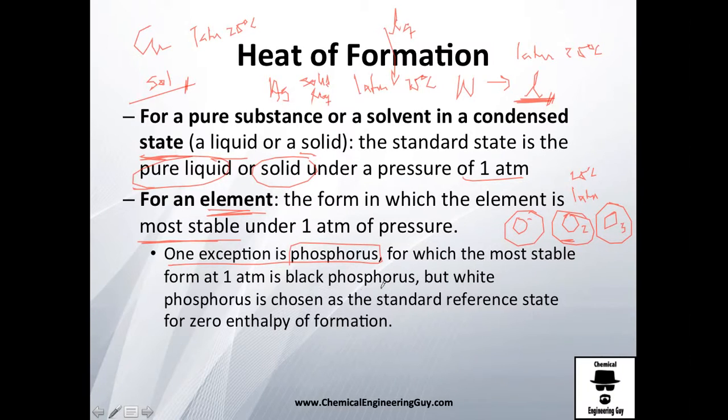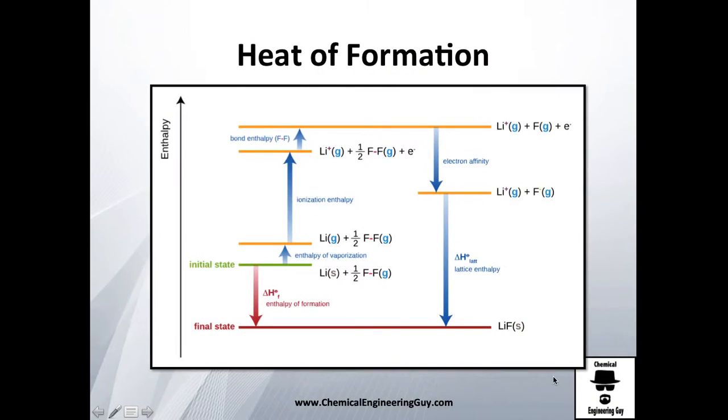We have one small exception, which is phosphorus, for which the most stable form at one atmosphere is black phosphorus. But, the convention was to use white phosphorus for that standard reference state. So, if you're using white, it will be zero. If you're using black phosphorus, you will need to check it out.